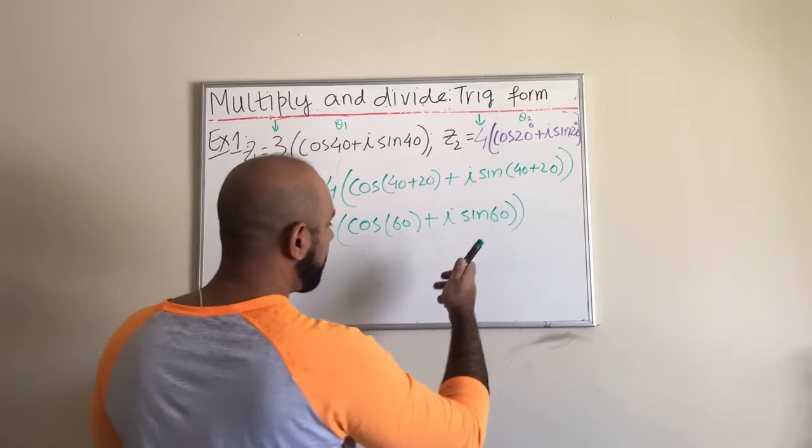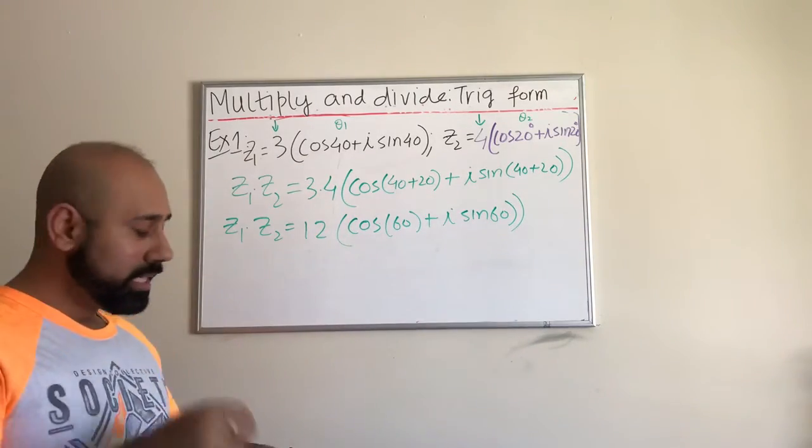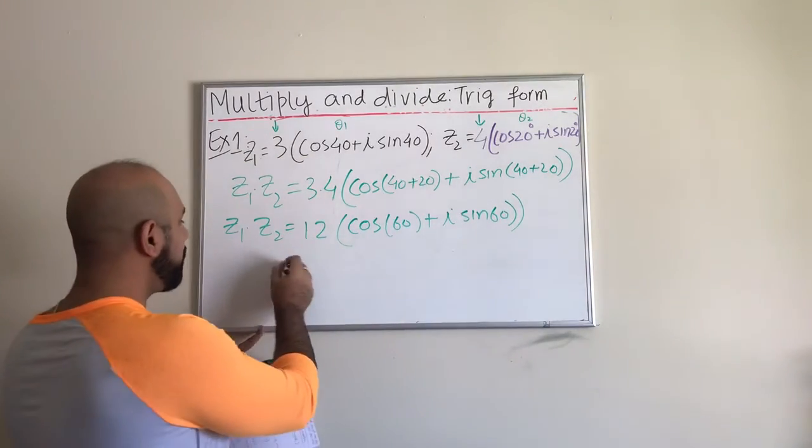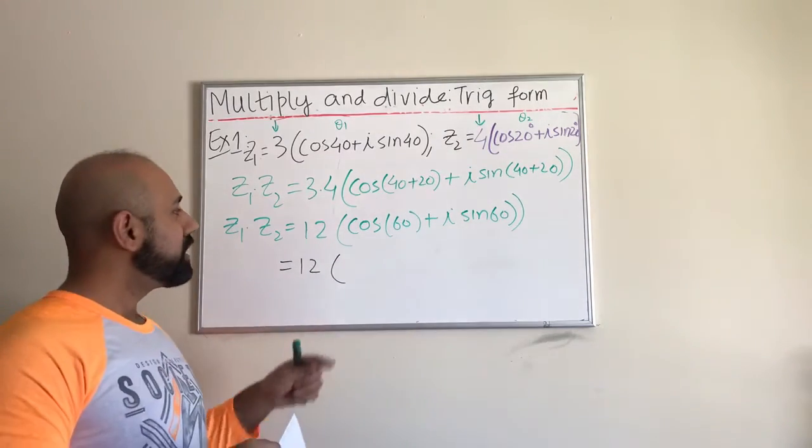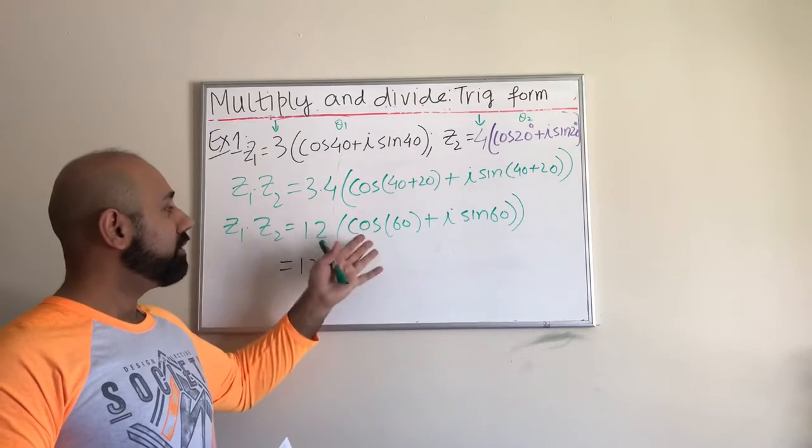And then this is cosine of 60 plus i times sine of 60. So now this is simplified into the trig form, but now we want to convert it back into the standard form which is not too difficult. We just have to look at our unit circle.